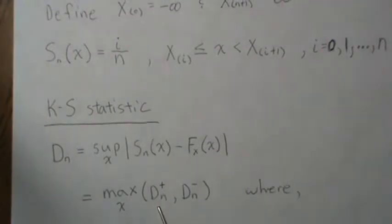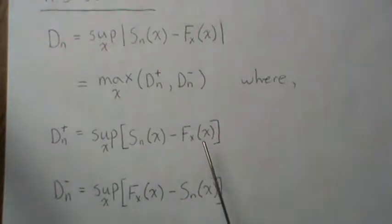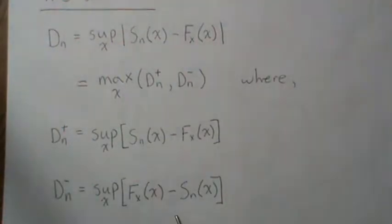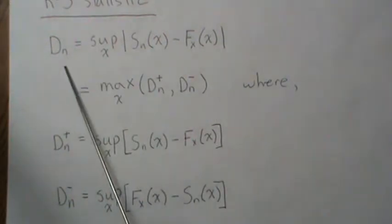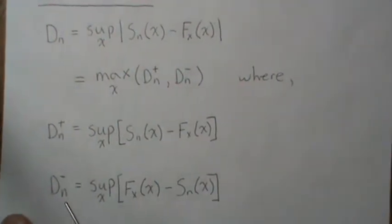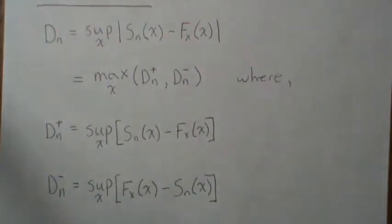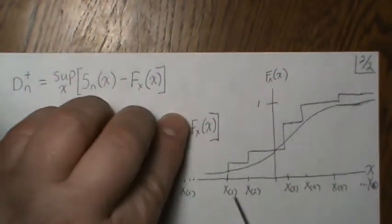An equivalent formulation is that D_n equals the maximum of D_n+ and D_n−. D_n+ is the empirical CDF minus the hypothesized CDF F, and D_n− is F minus the empirical CDF. These are signed (not absolute value) differences, so the largest one is still equivalent to D_n. It's easier to show that D_n+ and D_n− are nonparametric individually, and then their maximum gives us the true KS test.